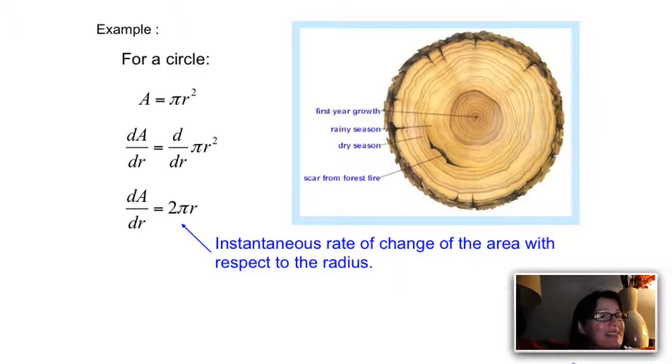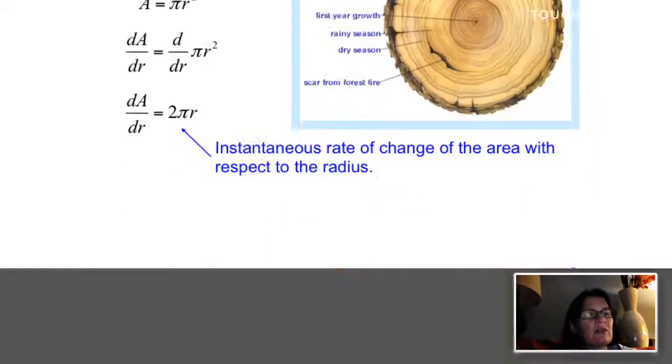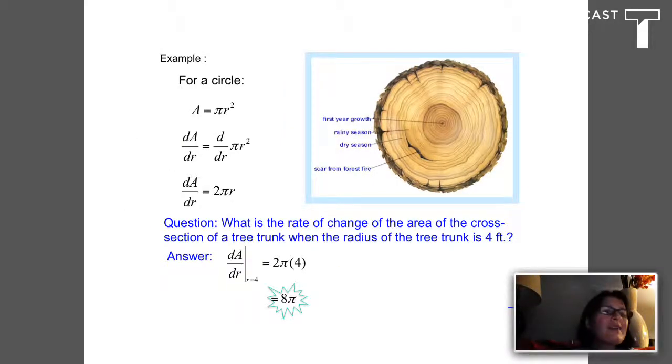I would call this the instantaneous rate of change of the area with respect to the radius, or the derivative of A with respect to r. Now I can ask this question: What is the rate of change of the area of the cross-section of the tree trunk when the radius is exactly 4 feet?